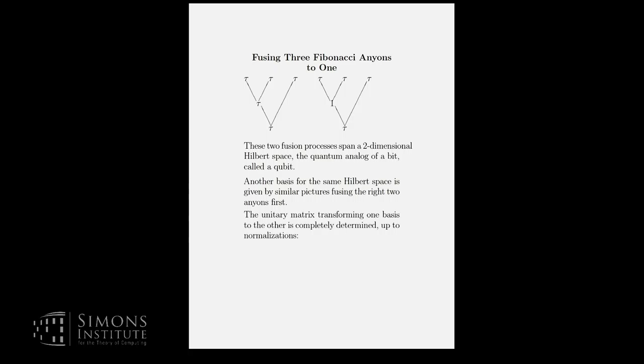Unitary transformation, which it says here, is completely determined up to normalizations. This is not always the case. More complicated fusion rules may leave you several choices for how these things match up. But in the case of Fibonacci, things are simple. There's only one option. Up to normalizations means changing one of the basis vectors by a phase factor or something like that.